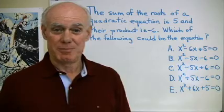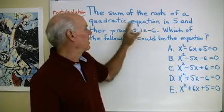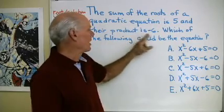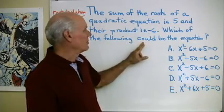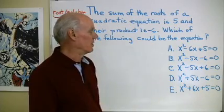Okay, here's a question off a sample SAT exam. It says the sum of the roots of a quadratic equation is 5 and their product is negative 6. Which of the following could be the equation? And here's a list of equations to choose from.